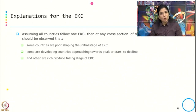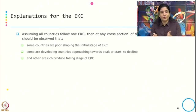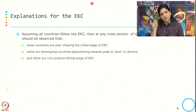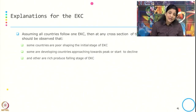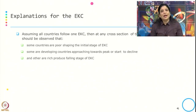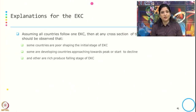Developed countries are assumed to always contribute to the decreasing part of environmental degradation, but there is also evidence that they contribute to the peak part. Interestingly, empirical investigation shows different turning points for each country and how they contribute to the Environmental Kuznets Curve.